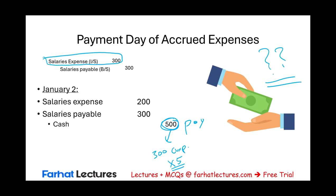We will see later that the company will have the option to do what's called a reverse entry. On January 1st, they can reverse this entry — we'll talk about that when we look at reversing entries. Now let's take a look at this multiple choice question from farhatlectures.com. A company incurs utility expense throughout December but received the bill in January. According to the matching principle, what is the appropriate accounting treatment for the December financial statement?